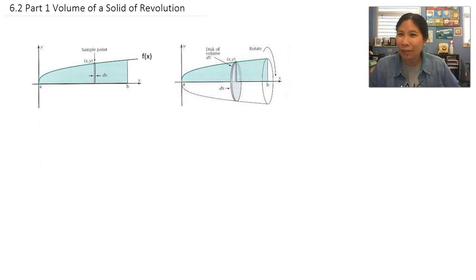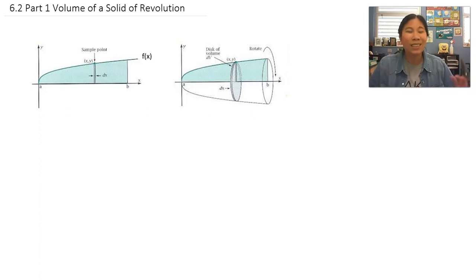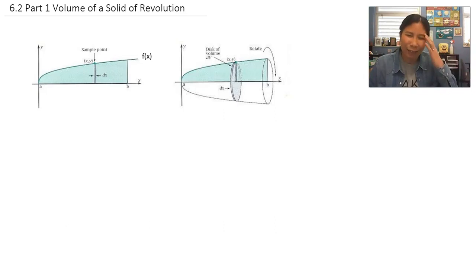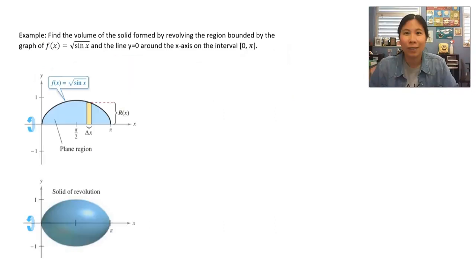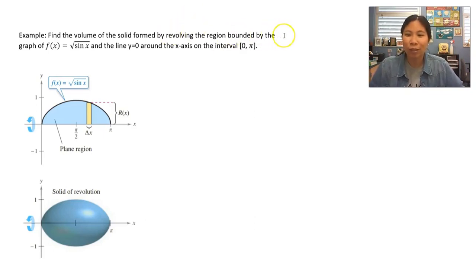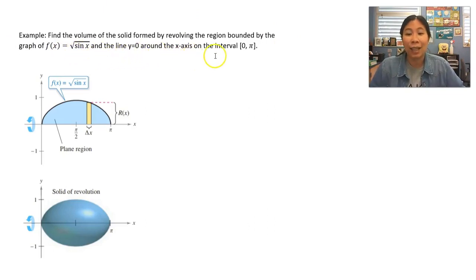So that's the summary of how to find the volume of a solid of revolution. Let's do some examples with more pictures so you can visualize this better. For this first example, we're going to find the volume of the solid formed by revolving the region bounded by f of x equals square root of sine x and the line y equals zero around the x-axis on the interval from zero to pi.